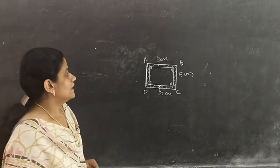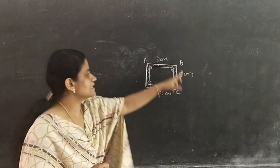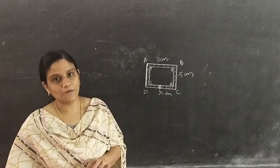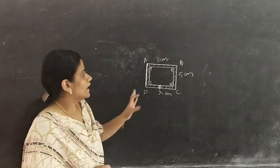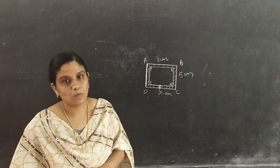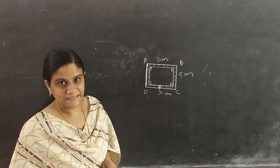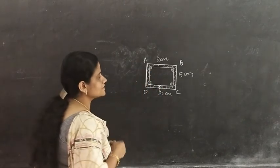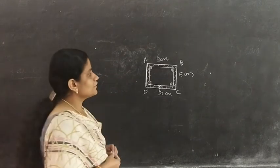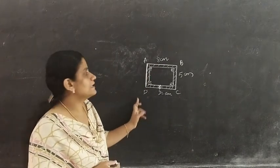Here ABCD is the cardboard which is 8 cm long and 5 cm wide. This cardboard is given a margin of 1.5 cm wide. Let the shaded part be the margin. We have to find the area of the margin, which is area of ABCD minus area of PQRS.